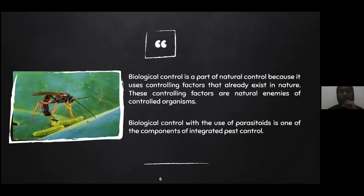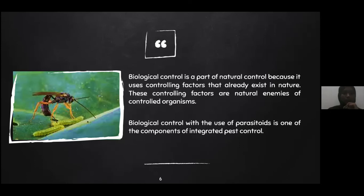Biological control is a part of natural control because it uses controlling factors that already exist in nature. These controlling factors are natural enemies of the controlled organism. Biological control with the use of parasitoids is one of the components of integrated pest control.